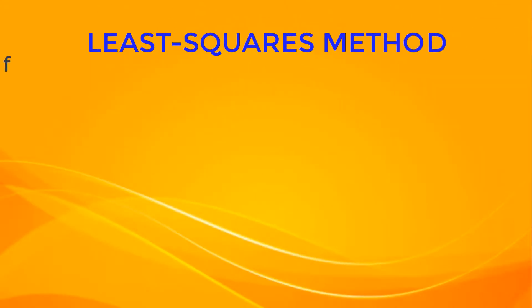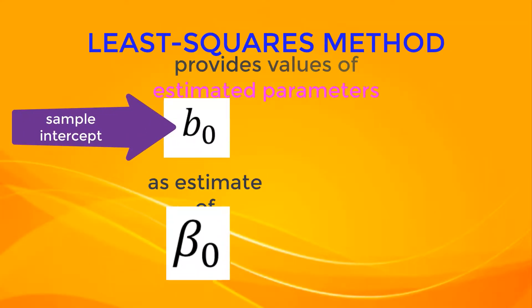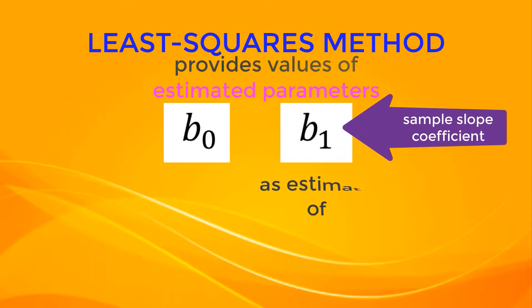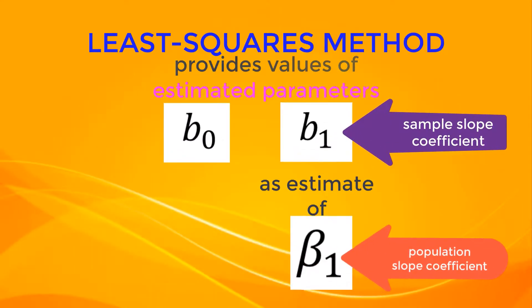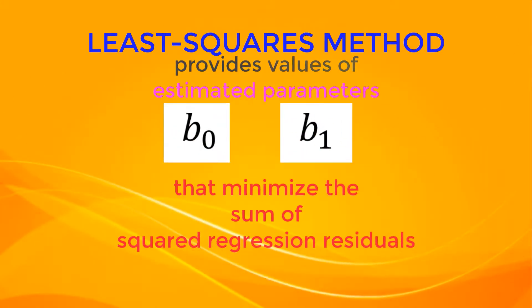The least-squares method provides values of estimated parameters: B0 sample intercept as estimate of beta 0 population intercept, and B1 sample slope coefficient as estimate of beta 1 population slope coefficient, that minimize the sum of squared regression residuals.